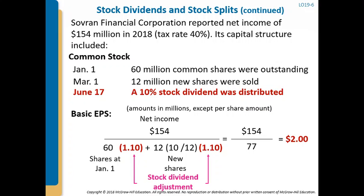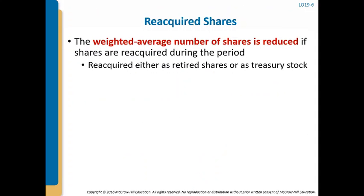So here you've increased the number of shares by 11. Now, what happens when you reacquire shares, whether you are retiring those shares or bringing them back as treasury shares? The weighted average number of shares is reduced. As it says in the book, the number of reacquired shares is time-weighted for the fraction of the year that they were not outstanding, prior to being subtracted from the number of shares outstanding during the period.